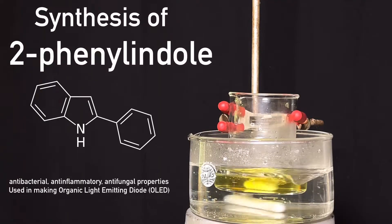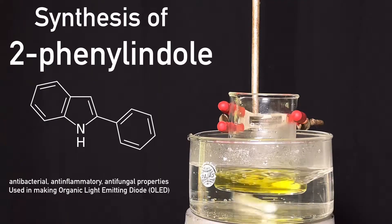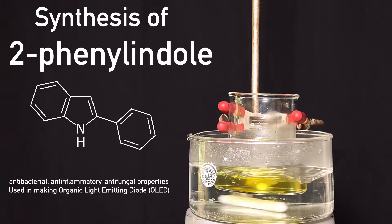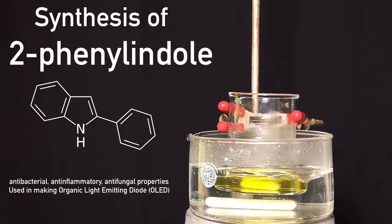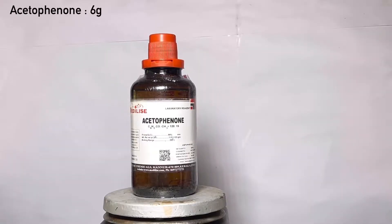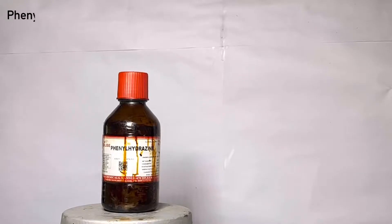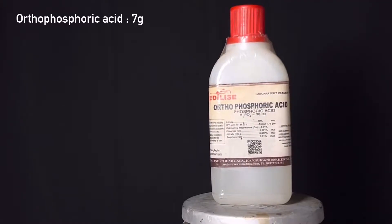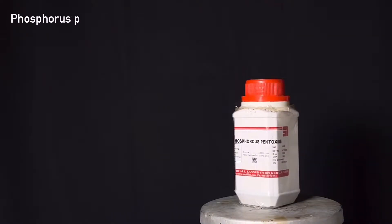Hello friends, in this video we will be synthesizing 2-phenylindole from acetophenone and phenylhydrazine using the Fischer indole reaction. For this synthesis you will need 6 grams of acetophenone, 5.4 grams of phenylhydrazine, 7 grams of orthophosphoric acid, and 13 grams of phosphorus pentoxide.